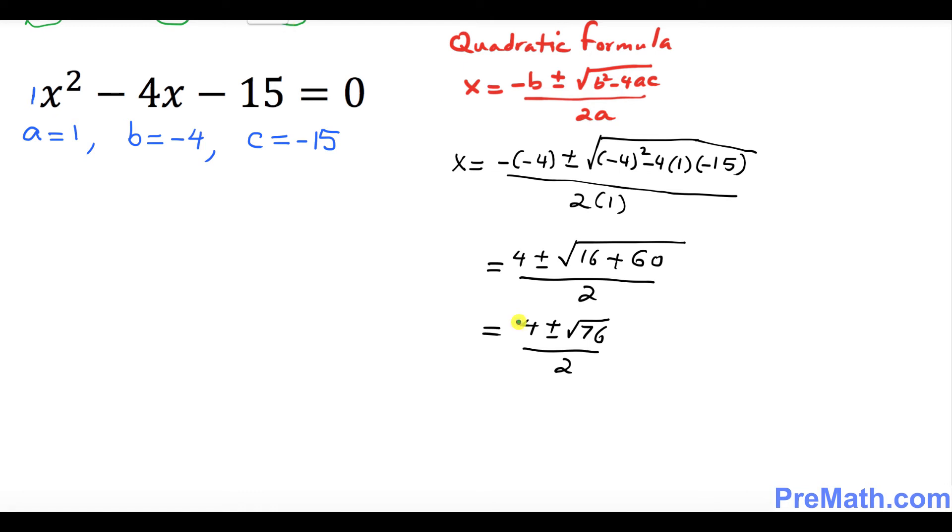Now I want you to look at this part, square root of 76, which could be written as I can factor it out, 4 times 19. And I can break this radical up, 4 and 19. And we know the square root of 4 is 2 square root of 19.